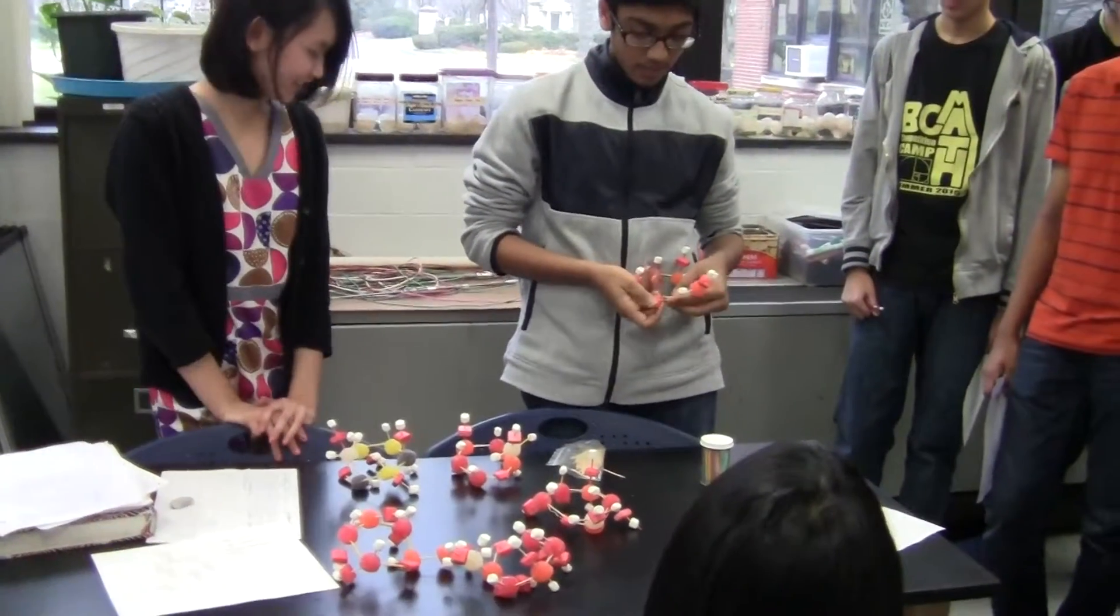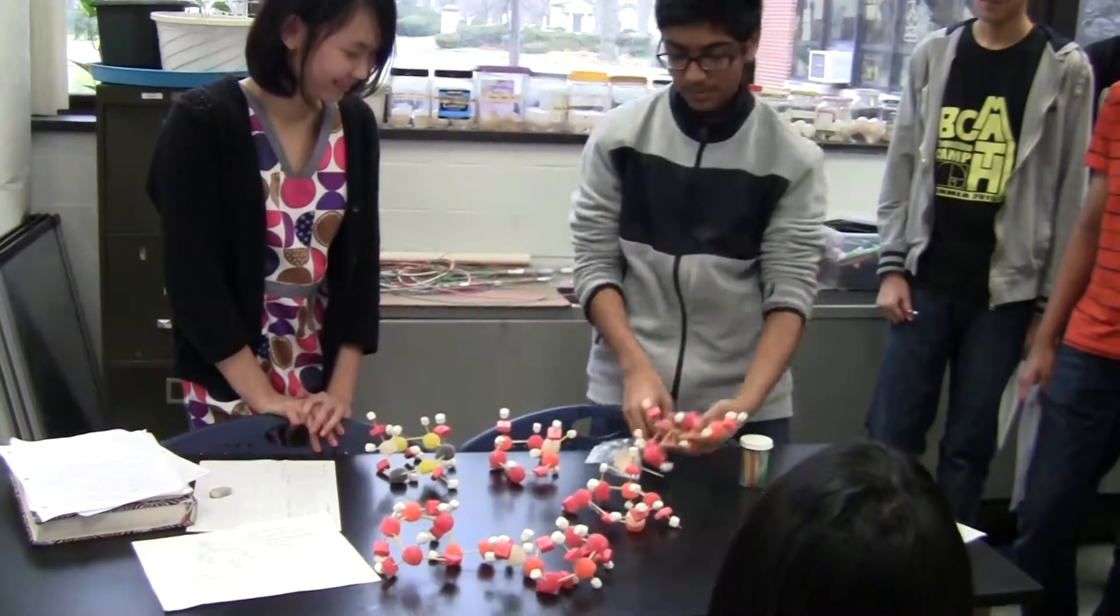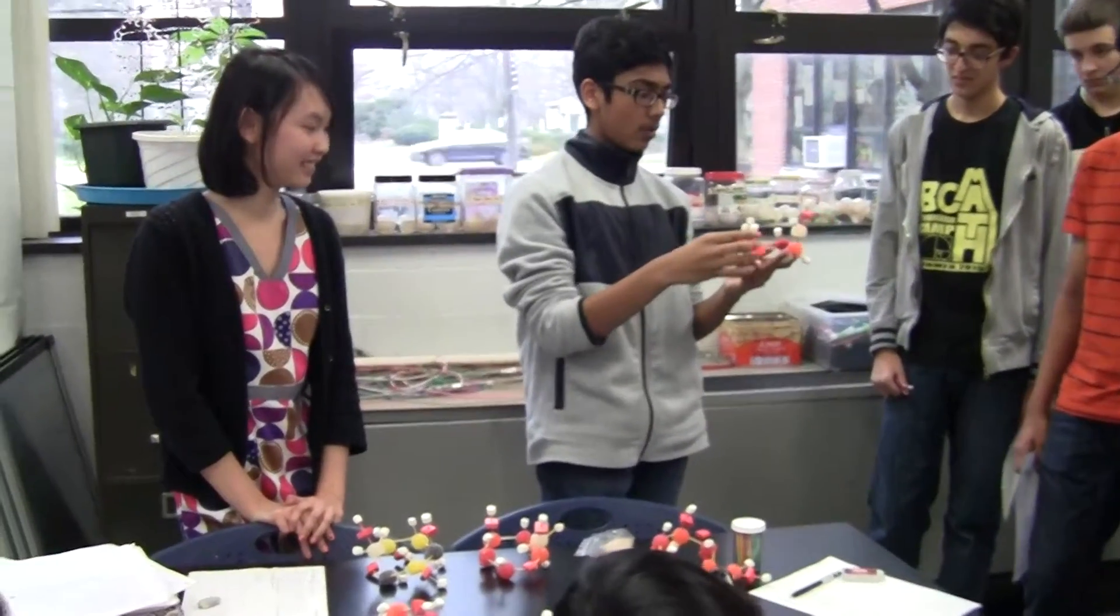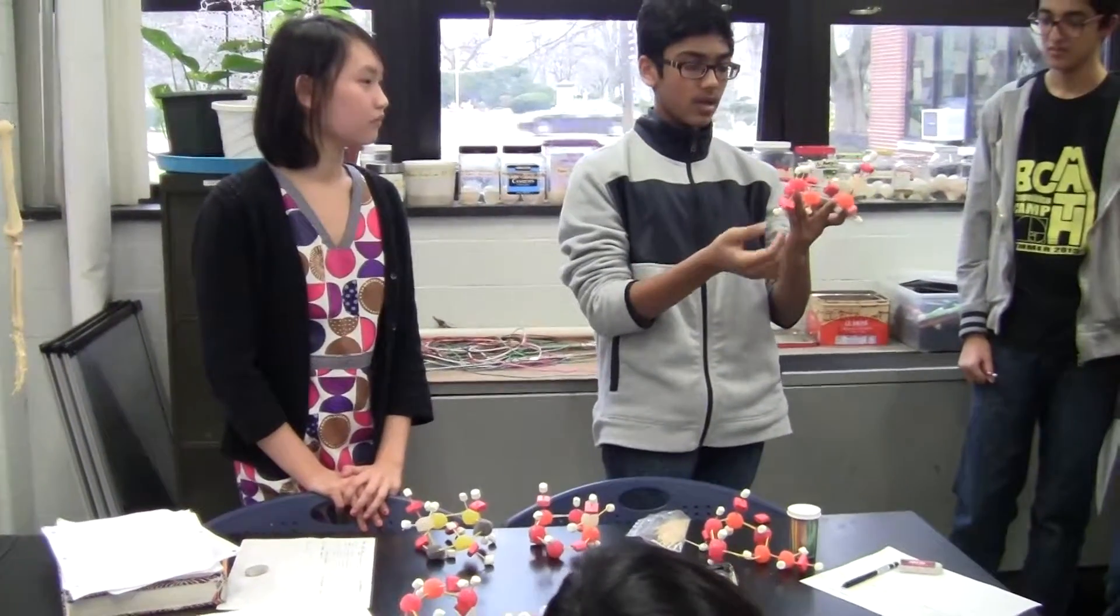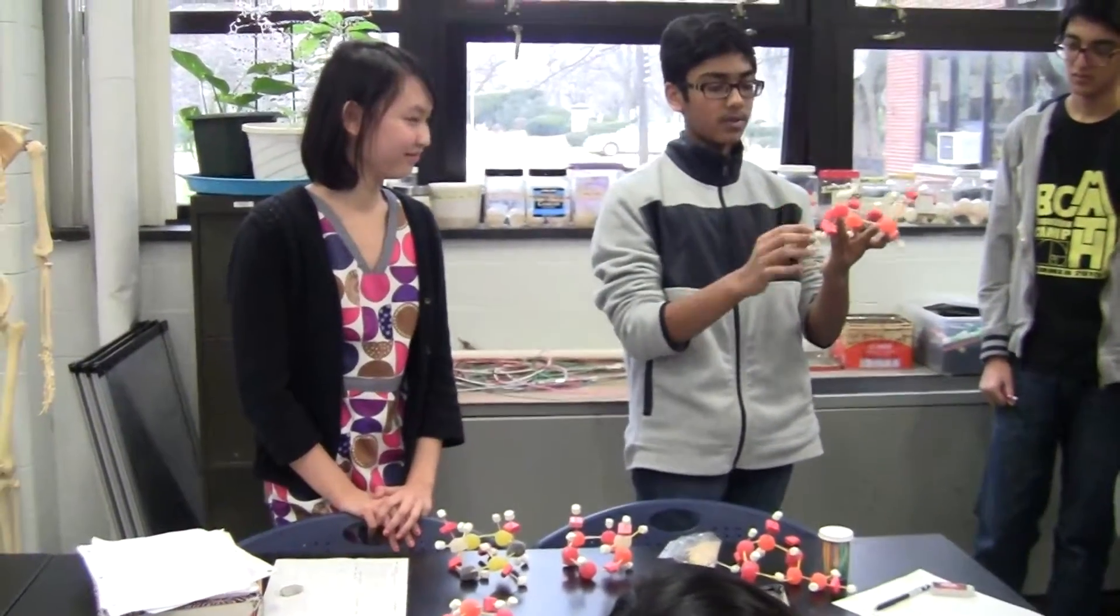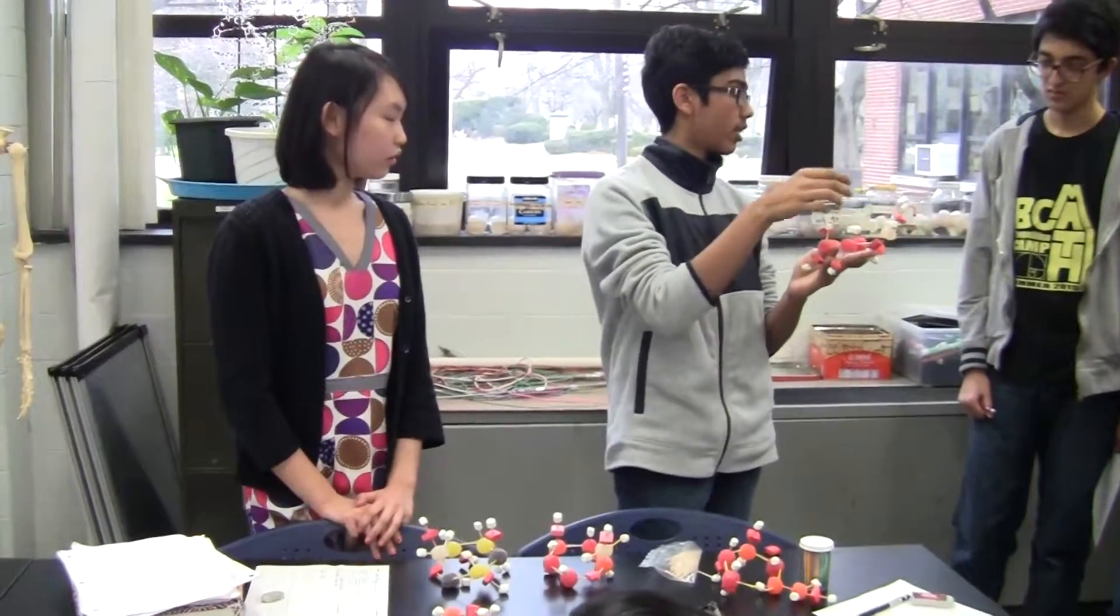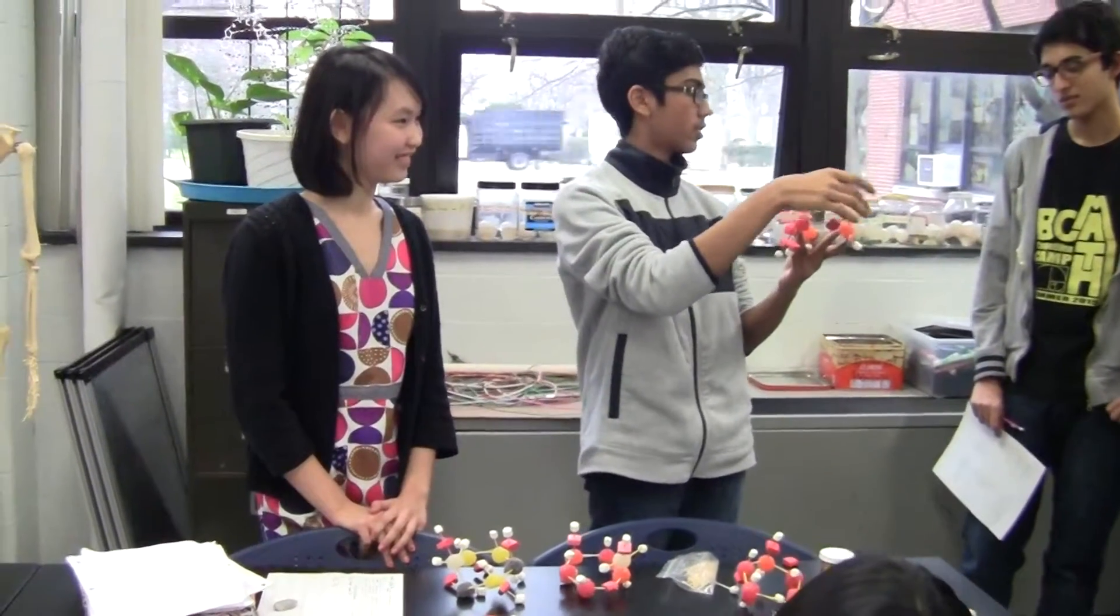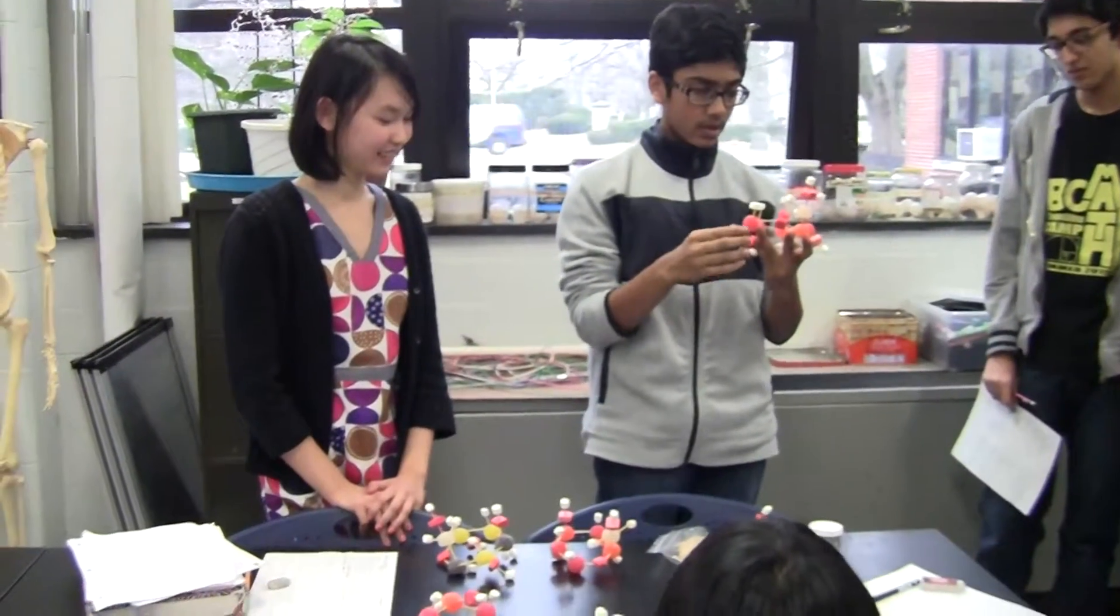Our model was, we wanted it to be 3D because glucose has this down, down, up, down structure, which is in 3D. These gumdrops represent carbon in our model, and what we've done is the red ones are meant to represent the carbons where the hydroxide is down, and the orange ones are the ones where they're up. And finally, because we were running out of some of the gumdrops, we had to use other colored gumdrops for the carbon on this group.